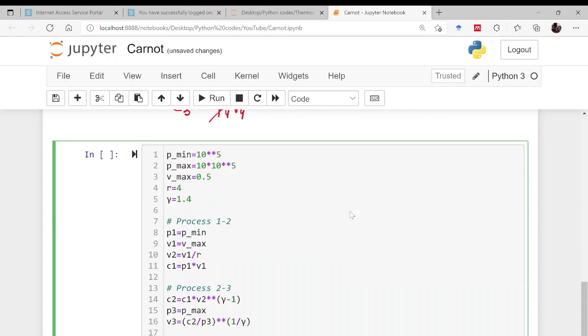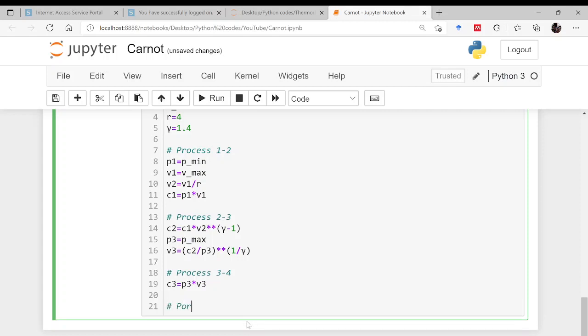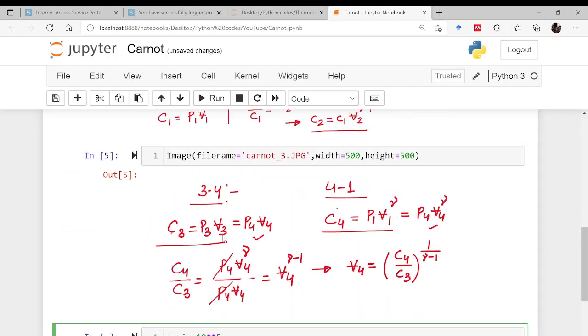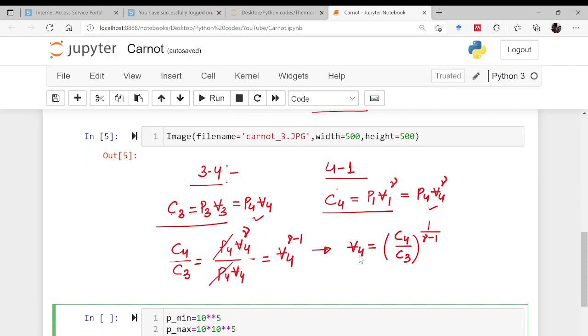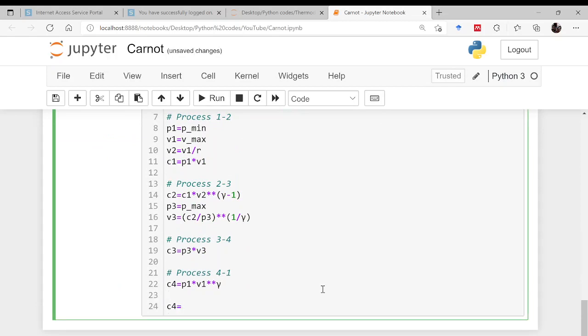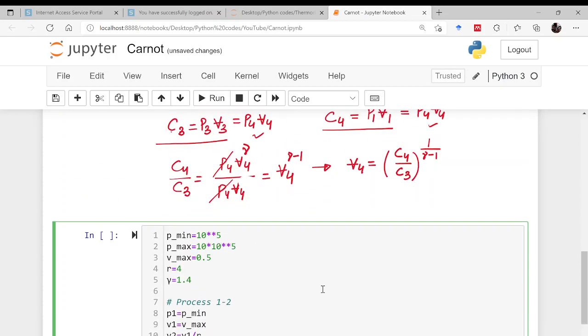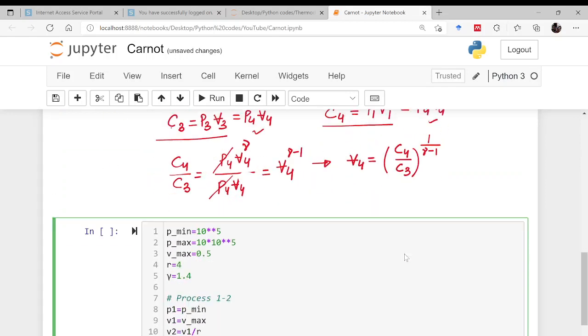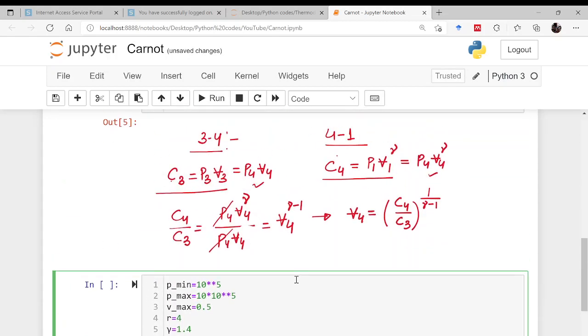And for 4 to 1, for the process 4 to 1, C4 was P1 into V1 to the power gamma. So this is also done. Now what we will be doing is we will be dividing this C4 by C3 to get our V4. So V4 is equal to C4 by C3 to the power 1 by gamma minus 1. So V4 is also known to you.